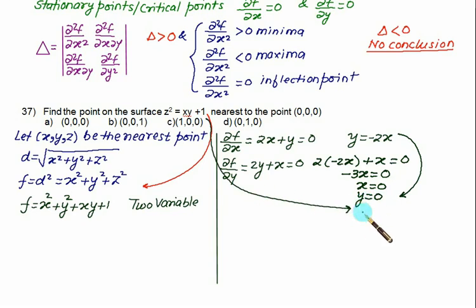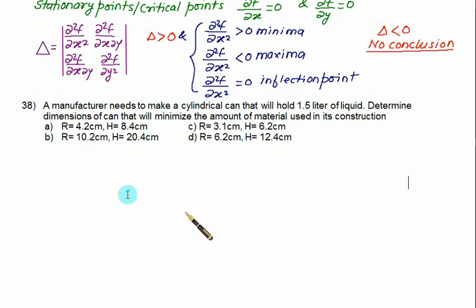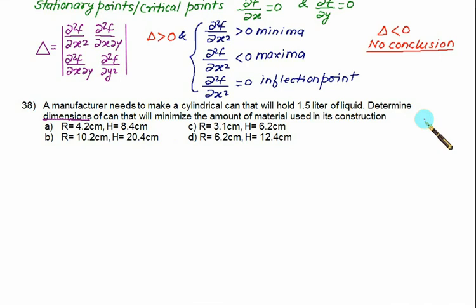From the plane equation with x = 0 and y = 0, we get z² = 1, so z = 1. Therefore the nearest point is (0, 0, 1). Next problem: a manufacturer needs to make a cylindrical can that will hold 1.5 liters of liquid. We need to determine the dimensions that minimize the amount of material used.